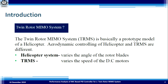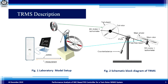Twin Rotor MIMO System is basically a prototype model of a helicopter system. The aerodynamic model of a helicopter system and Twin Rotor MIMO System are different — the helicopter varies the angle of the rotor blade, whereas the Twin Rotor MIMO System varies the speed of the DC motors. Since modeling helicopter systems is very expensive and complex, many researchers choose this laboratory model setup for the Twin Rotor MIMO System. This is the laboratory model setup and the schematic block diagram of the TRMS.